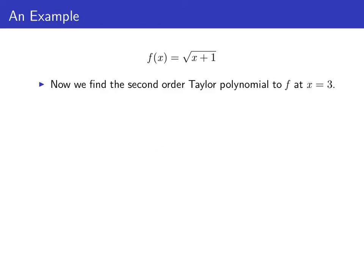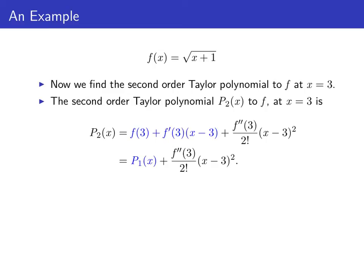Now we find the second order Taylor polynomial to f at x equals three. Here p sub two of x is f of three plus f prime of three times x minus three plus the second derivative of f at three divided by two factorial times x minus three squared. Notice that the first two terms combine to give us p sub one of x. So to find p sub two of x we just take p sub one of x and add the second derivative of f evaluated at three divided by two factorial times x minus three squared.